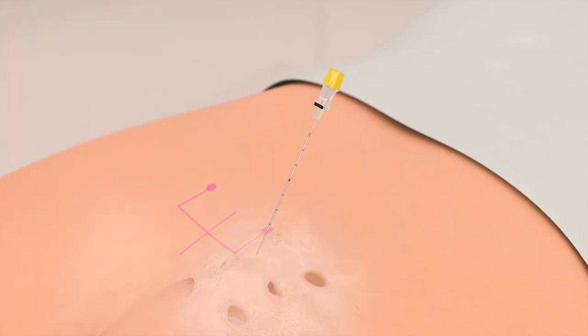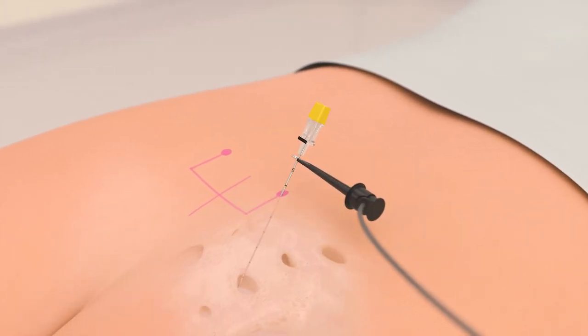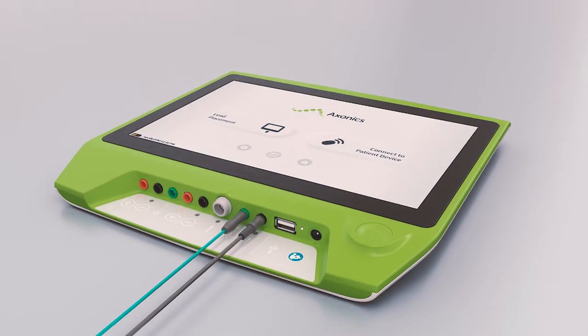Once the foramen is accessed, advance the foramen needle slightly. The needle test stimulation cable is clipped to the uninsulated portion of the foramen needle. The other end is connected to the clinician programmer.